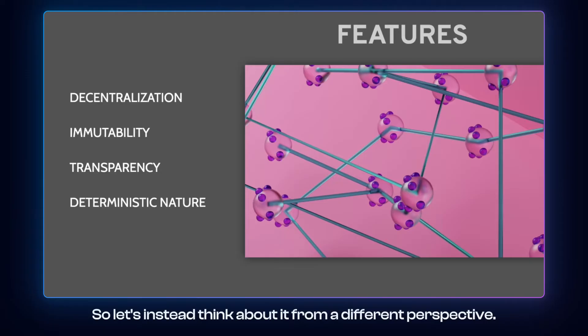So let's instead think about it from a different perspective. I distinguished four features smart contracts are associated with: decentralization, immutability, transparency, and deterministic nature. So I will give you a couple of examples which should tell you more about what exactly these mean.